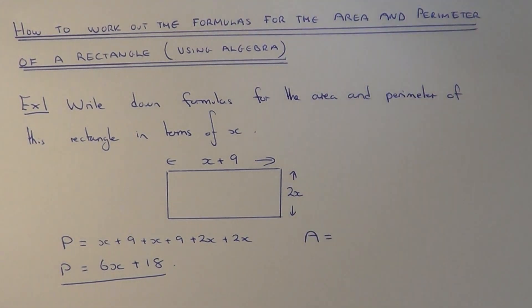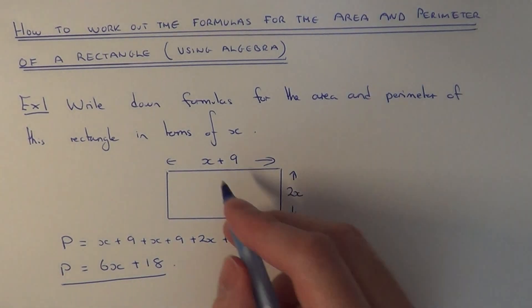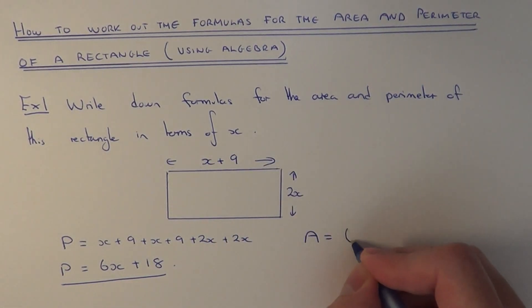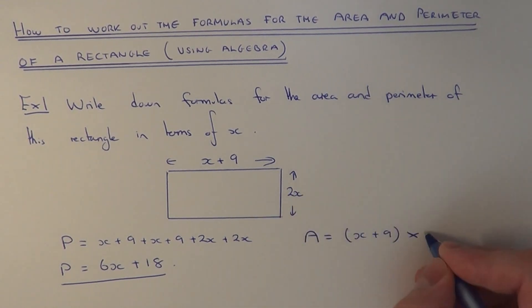So our formula will be a equals x plus 9 put this in the bracket and multiply this by the 2x.